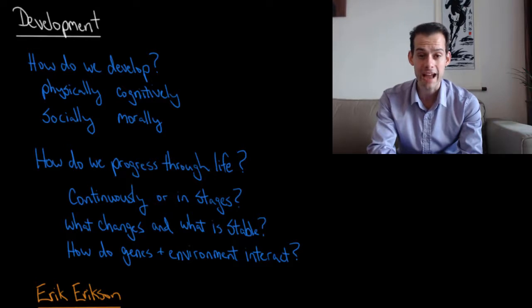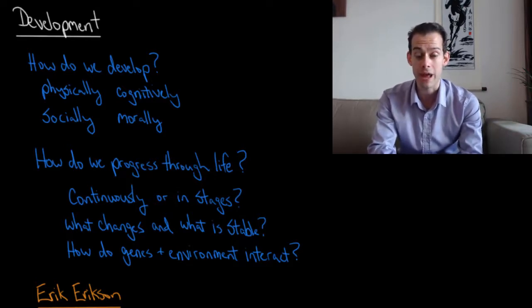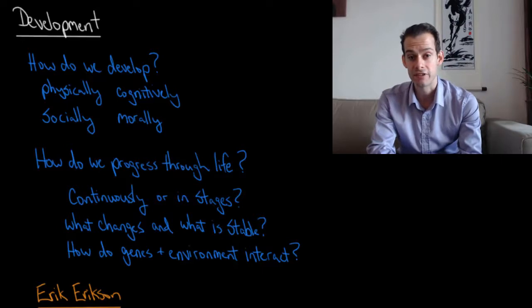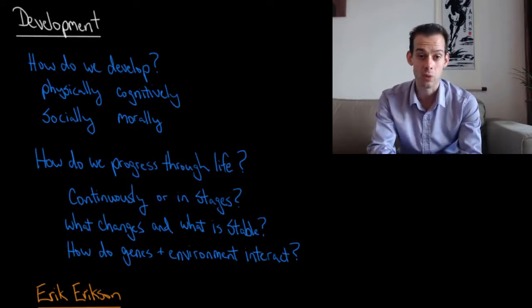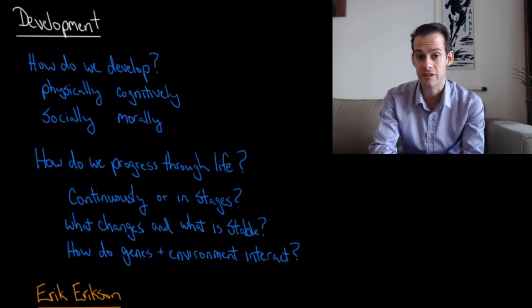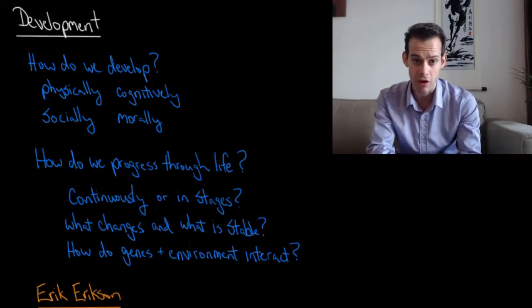Throughout this course we've looked at many factors that can influence people's behaviors and the many ways that people can differ from one another. We've seen differences in biology like levels of neurotransmitters or hormones, differences in cognition and memory, differences in traits like intelligence or Big Five personality traits, and differences in motivations. So now we're going to ask the question: how do these differences develop? How do people become the people that they are?